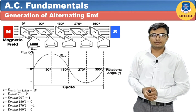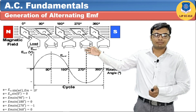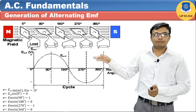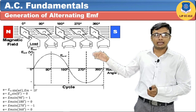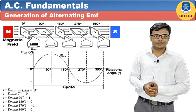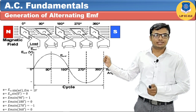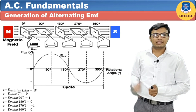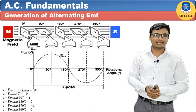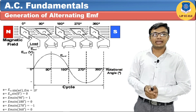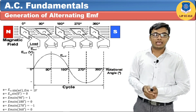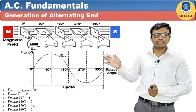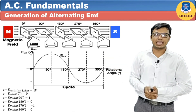During starting it remains zero; from 0° to 90° it increases; at 90° it becomes maximum; after 90° it reduces; at 180° it becomes zero again; after that it increases in the reverse direction; at 270° it becomes negative maximum; and at 360° it returns to zero. This generates one positive half cycle and one negative half cycle — together forming one full cycle, which is called a sine wave.